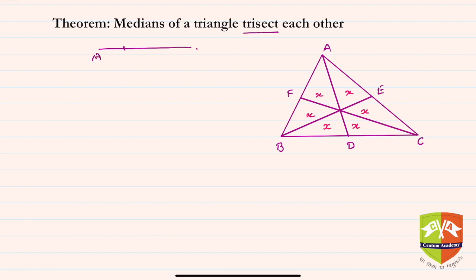For example, the point P is dividing AB in such a way that AP/AB equals 1/3 or AP/PB equals 1/2. This is called point of trisection.